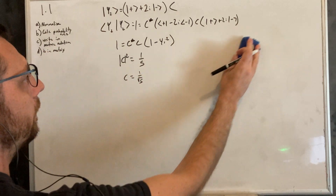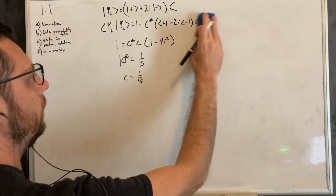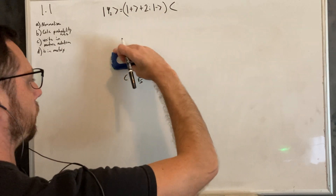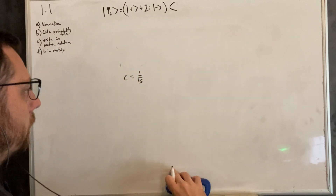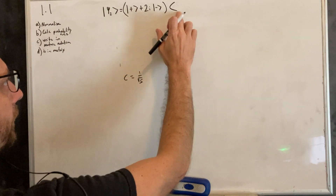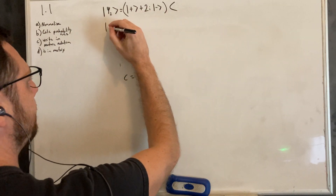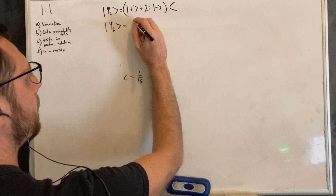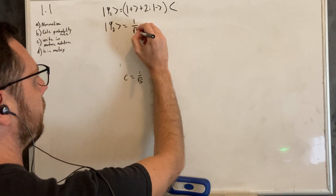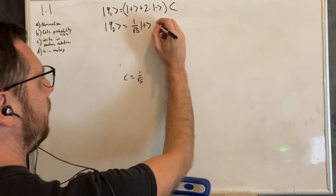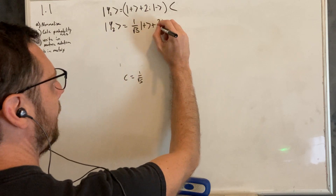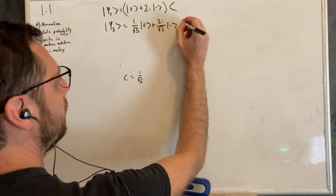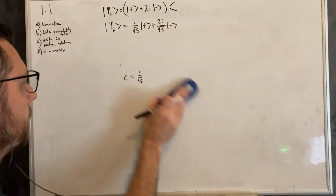So to normalize this, we just swap in our 1 over root 5 for c. It's going to become 1 over root 5 up plus 2i over root 5 down. And that's our normalized vector.